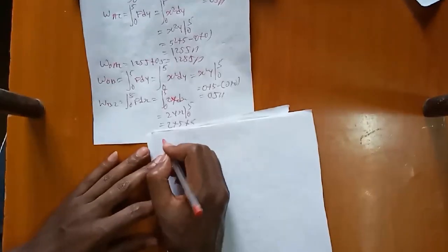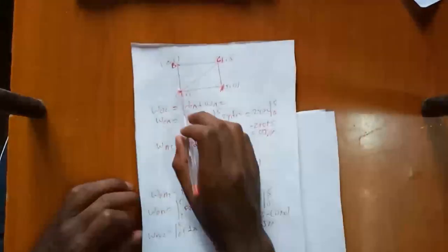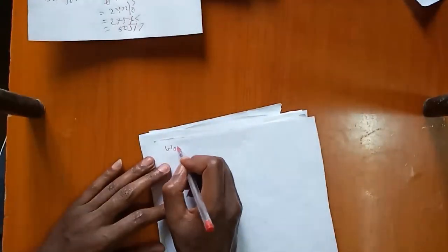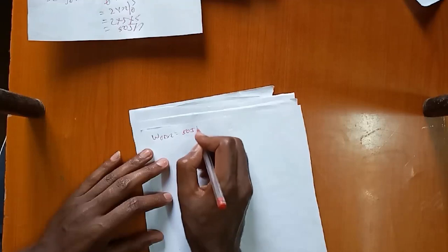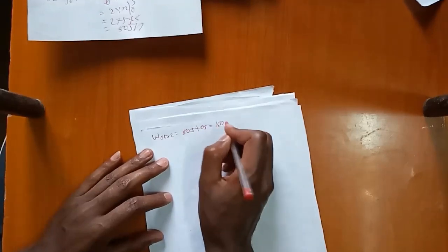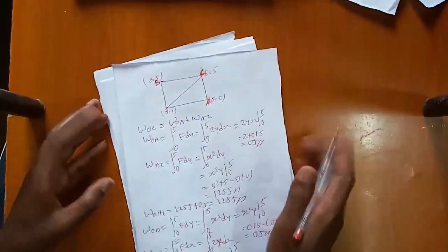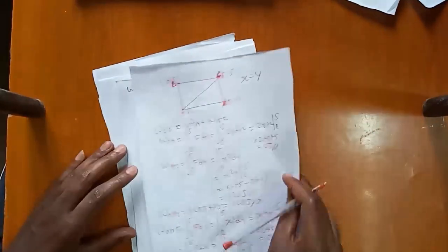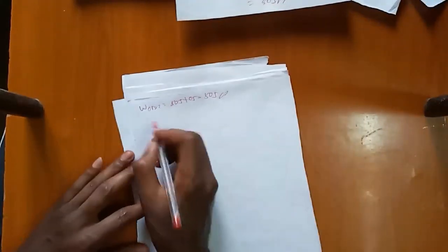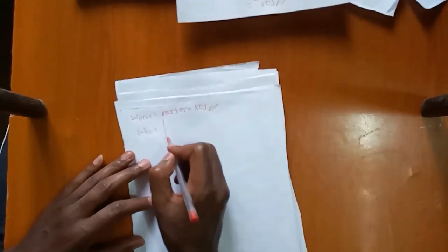We will replace the force components. F has components 2y·i plus x²·j. The line integral along OBC equals the integral from 0 to 5.